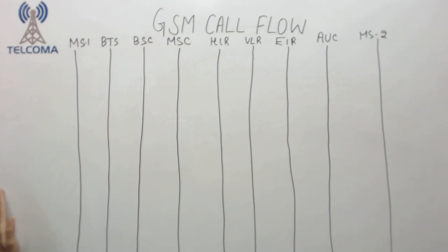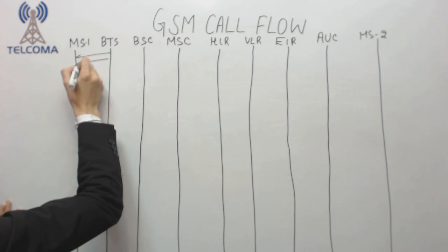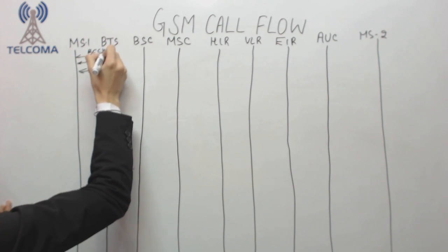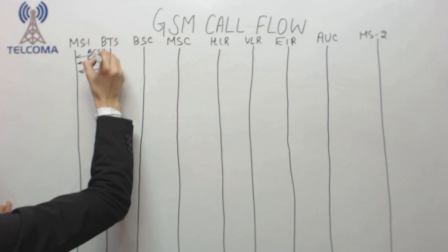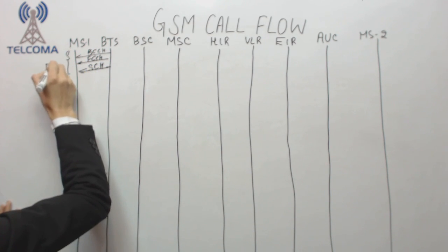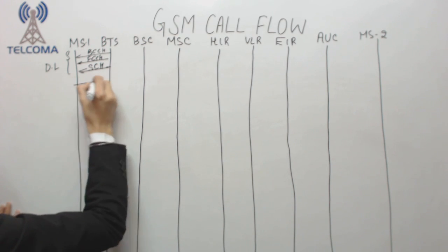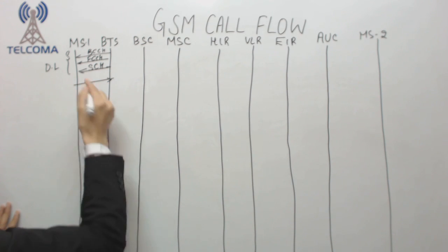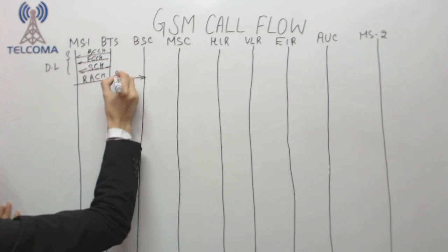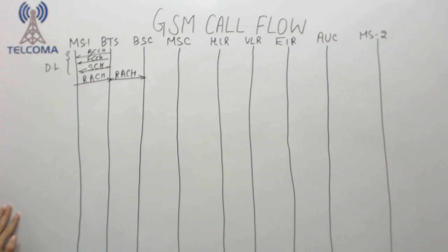From the BTS, the mobile station is getting broadcast channels — BCCH, FCCH, and SCH — in the downlink direction. Now when we want to make a call, that means we want to access the network, so we use the RACH channel. This RACH request is forwarded to the BSC, indicating that this mobile station wants to use the network.